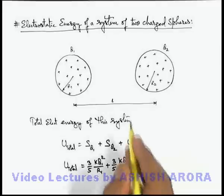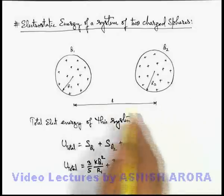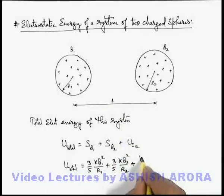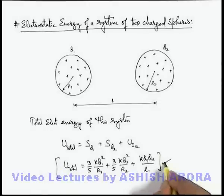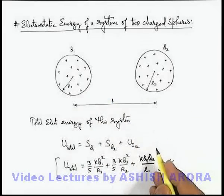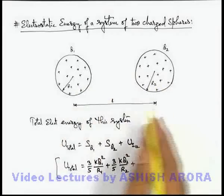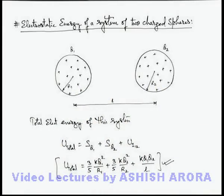Plus the work done in bringing the two spheres from infinity to the given configuration, that will be k q1 q2/l. So this will be the total electrostatic energy for a system of these two charged spheres separated by a distance l.